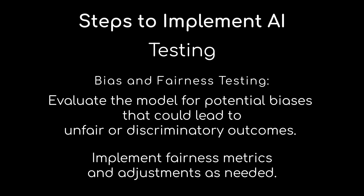Another important step: we need to ensure we're looking for any bias and fairness issues. We're going to evaluate the model for potential biases that could lead to unfair or discriminatory outcomes, and implement fairness metrics and adjustments as needed. We need to make sure we're not leaving out any groups and that we're accommodating all areas that need to be covered as part of this model. This is a really important aspect of building responsible AI.